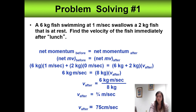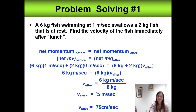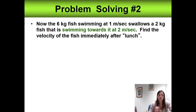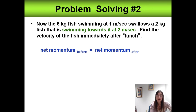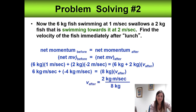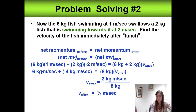We could convert three-quarters of a meter per second to 75 centimeters per second. There's another example I'll leave for you to solve — the solution is in the slides. In that version, the fish being eaten was moving toward the first fish, which slowed the first fish down more. The first fish was traveling at 1 meter per second and ended up at only a quarter meter per second.